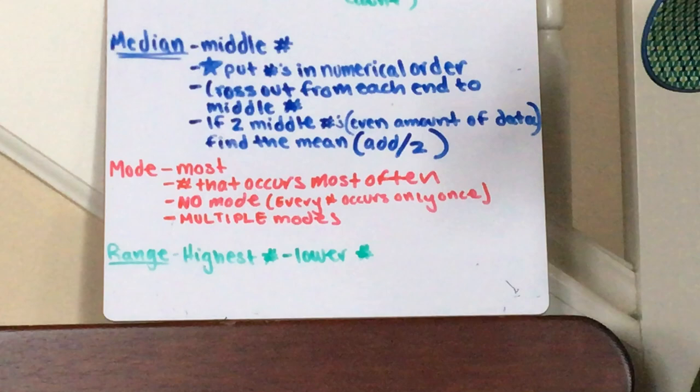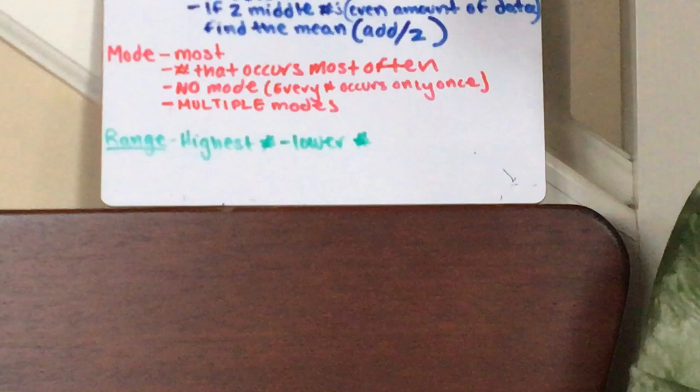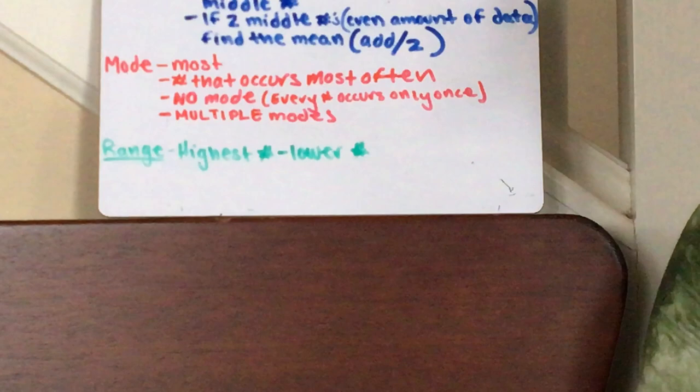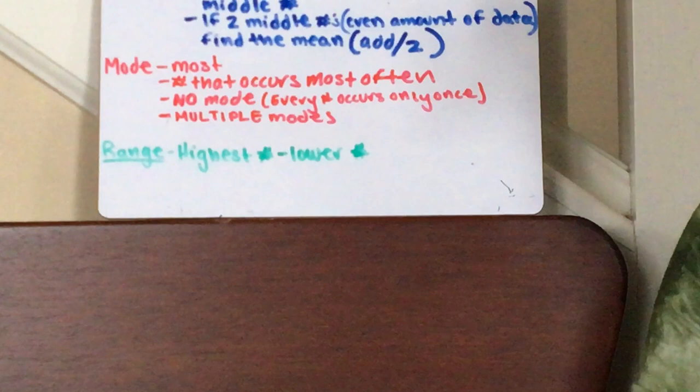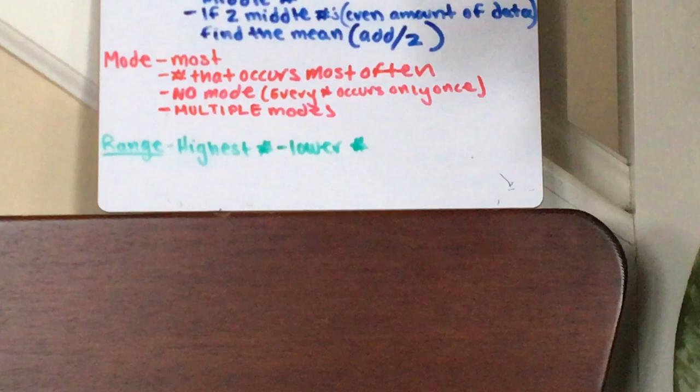The mode, that's the easy one. Mode sounds like most. They both have four letters, they both start with M. It's the number that occurs most often. And if there's no repeating numbers, there's no mode. And if there's like two twos and two fives, there would be multiple modes. I don't think you're gonna see a lot of that on IXL but I thought I'd throw that in.